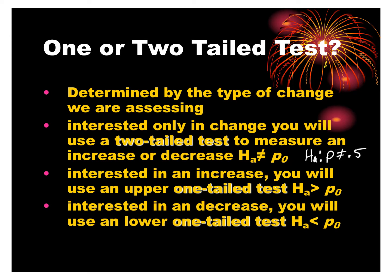We didn't have information either way to determine whether there was more red or more black, so our alternative hypothesis would just have been that it's not equal to 0.5. If you are interested in whether the new proportion is higher, the alternative would be p > 0.5. And if you're interested in a decrease, it would be p < 0.5.